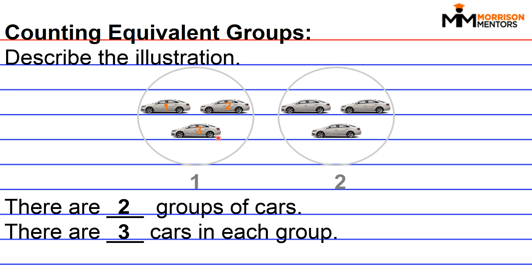So group one has three cars. Group two has three cars. Therefore, each group, each individual group has three cars. Alright, thanks for tuning in and good luck studying.